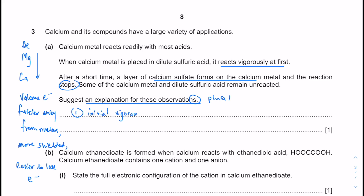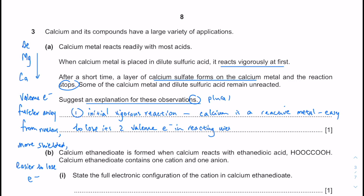That means very reactive because calcium is a reactive metal. Calcium is a reactive metal — it can lose the two outer shell electrons easily. It is easy to lose its two valence electrons in reaction with H2SO4 in a redox reaction.